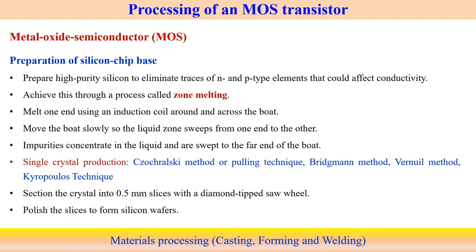Another important part is the semiconductor. The type focused on here is the metal oxide semiconductor (MOS). The semiconductor is an important part of the electronics industry. To manufacture a semiconductor, the first step is preparation of the silicon chip base. We start with silicon material — it is necessary to create high-purity silicon by eliminating N and P type impurities, because these affect the conductivity of silicon. High-purity silicon manufacturing is the first step, achieved using the zone melting process.